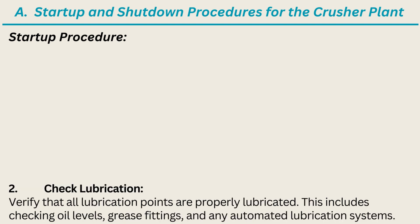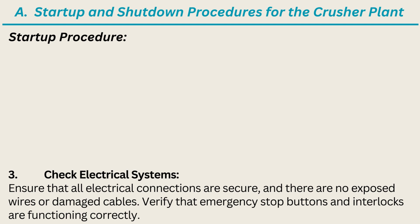2. Check lubrication. Verify that all lubrication points are properly lubricated. This includes checking oil levels, grease fittings, and any automated lubrication systems. 3. Check electrical systems. Ensure that all electrical connections are secure and there are no exposed wires or damaged cables. Verify that emergency stop buttons and interlocks are functioning correctly.